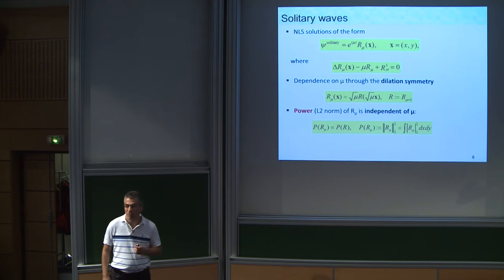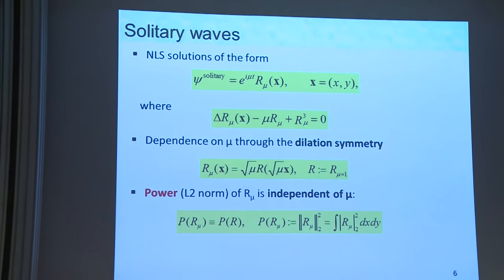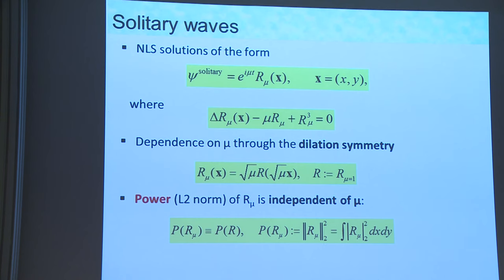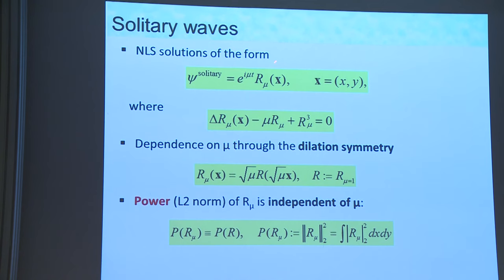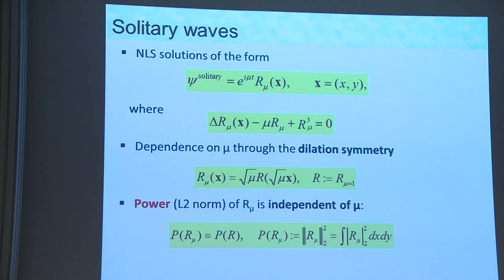Today I'm not going to talk about blow-up; I'm going to talk about solitary waves. We look for solutions that propagate in the z-direction without changing the radial profile. This is the well-known equation for the profile of these solutions. The dependence on the mu parameter is only through dilation, so it doesn't play an important role. We are always in the 2D cubic case — the L2 critical case.